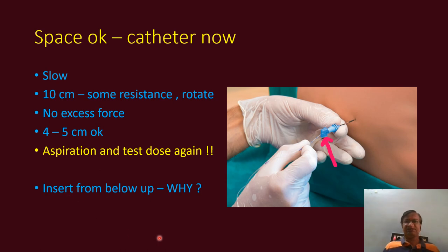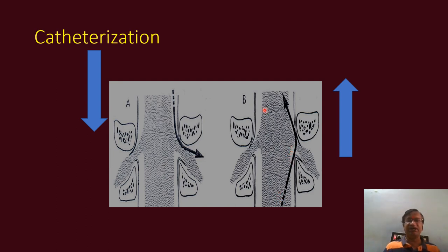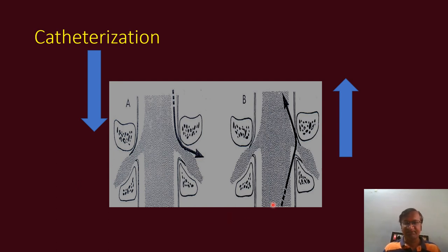Aspiration and a stress dose should always be performed. It is preferable to insert from below upward, with the Huber tip facing the head. This is because if you push the catheter from below, even if it wants to exit, the nerve roots will guide it back in. But if coming from above downward, the nerve root will deflect it toward the paravertebral space. So pushing from below upward allows the arrangement of the nerve roots to guide the catheter into the midline. That is why it is preferable to insert from below upward.